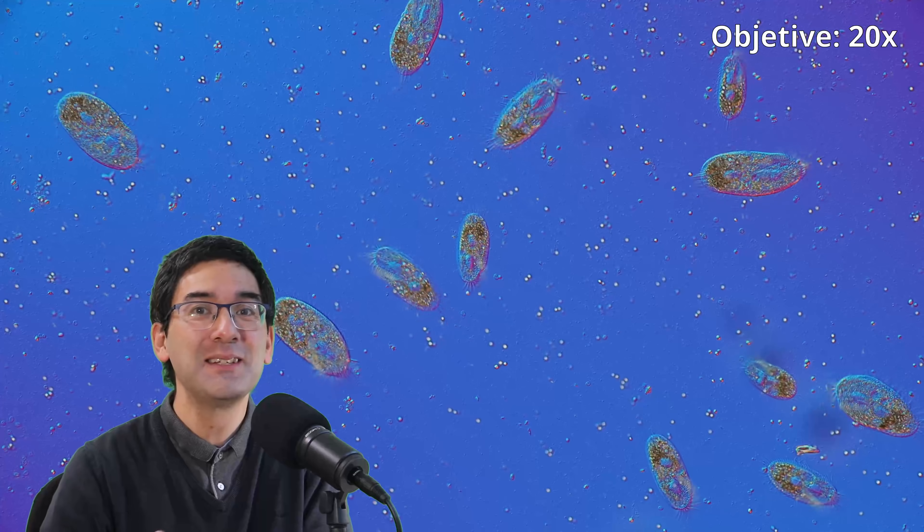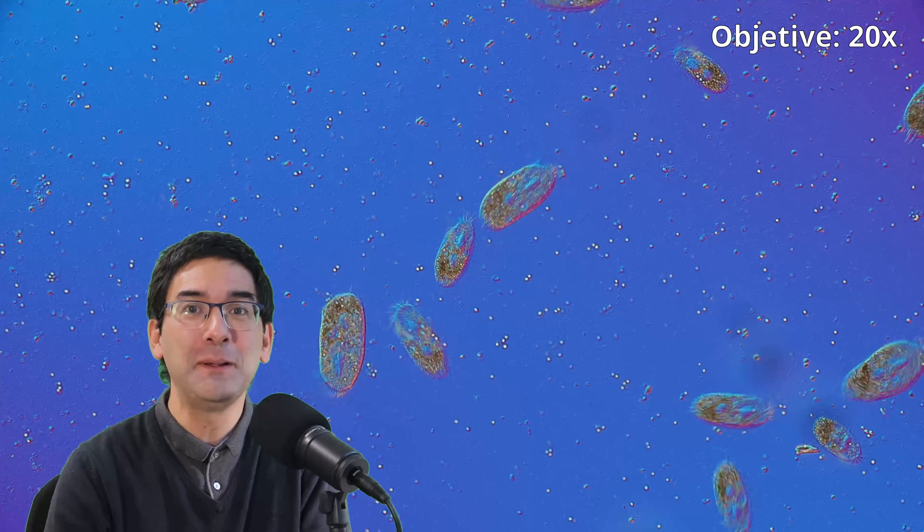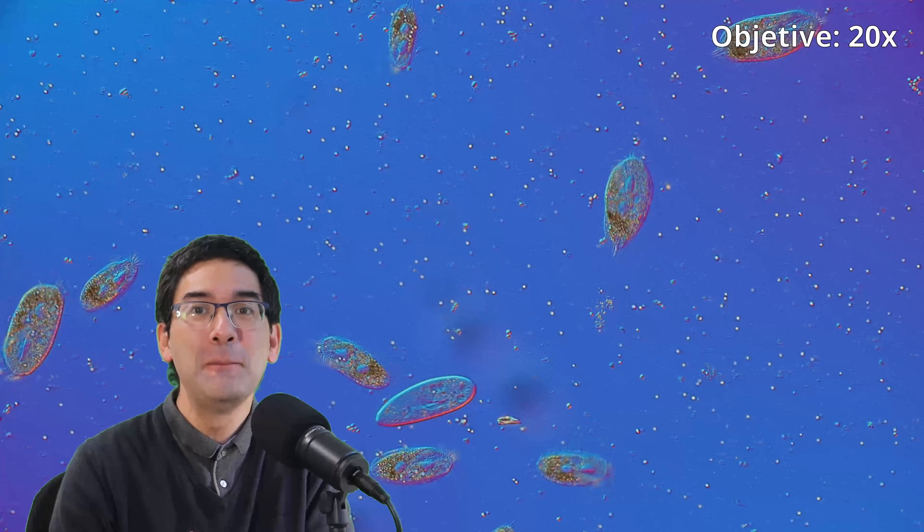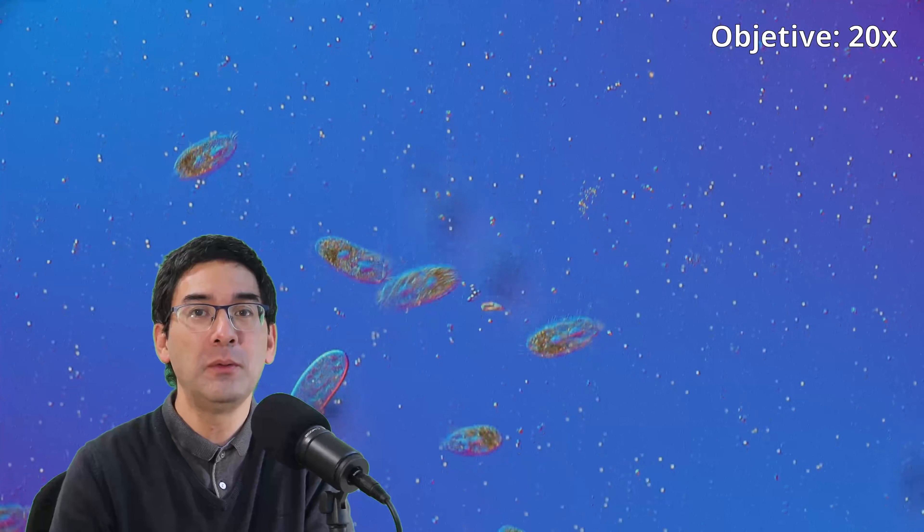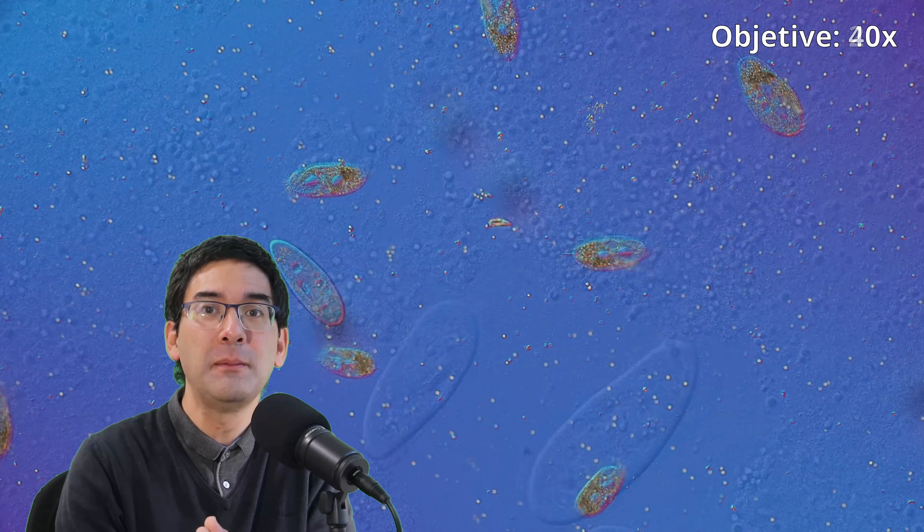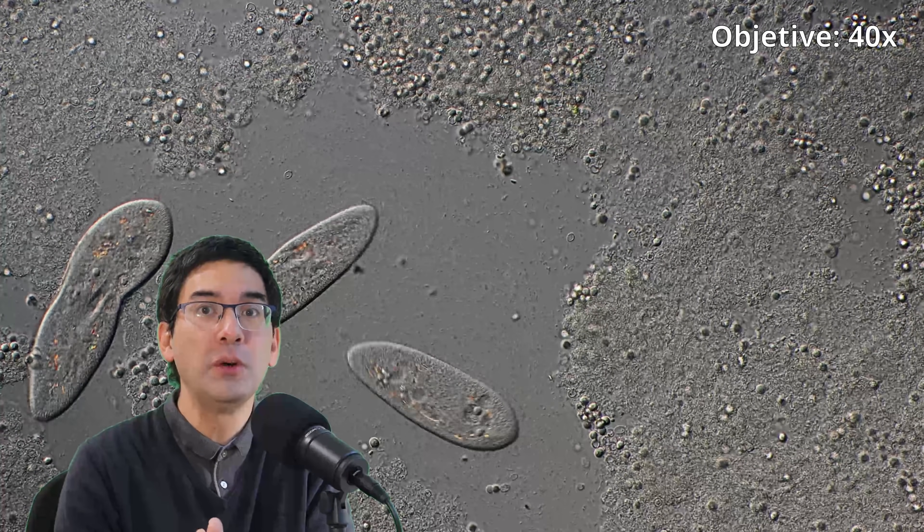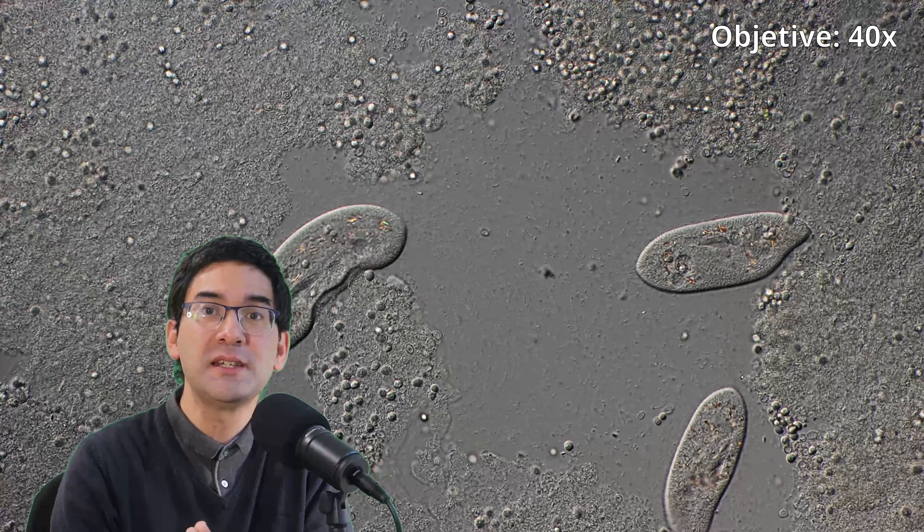Here we see those ciliates still swimming around more or less happily. The buffer solution has not reached them yet. But just after a minute or so, when the buffer solution is drawn beneath the microscope's cover glass, all of a sudden you're going to see that the cells start to lyse.